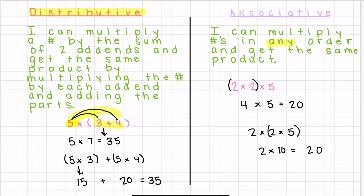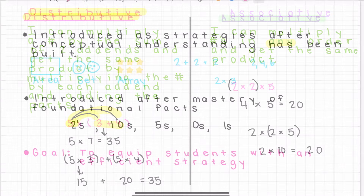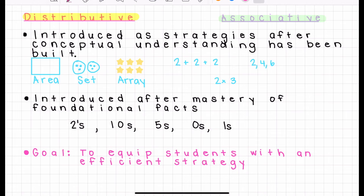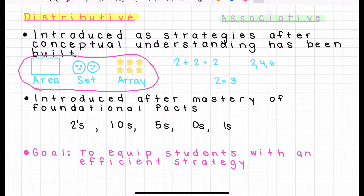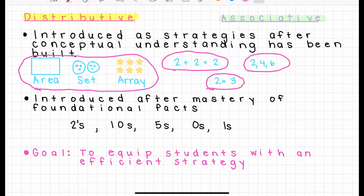Next, we're going to look at how we can solve some problems using both of these properties. The distributive and associative properties should be introduced as strategies after conceptual understanding has been built. So students should have explored multiplication through models such as tiling with area models, set models, and grouping arrays — rows and columns — and also explored the equations that go along with these models through repeated addition, which is introduced in second grade, skip counting, and relating that to a multiplication equation.